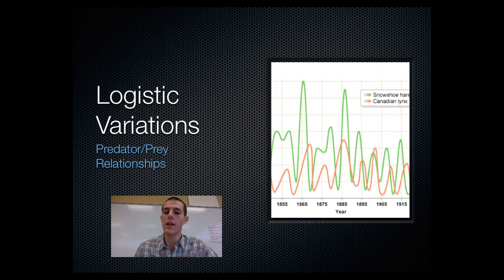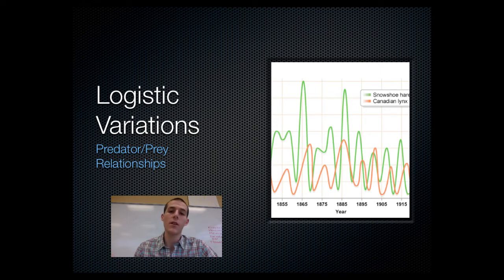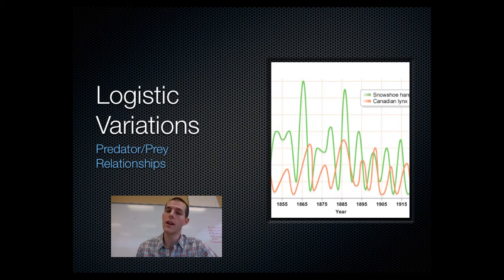The Canadian lynx preys on the hare. When there's a whole bunch of hare available, the lynx can have a lot of kids because it has an ample food supply. But once there become too many lynx, they kill off all the snowshoe hares. And once all the snowshoe hares are gone, there's not enough food for the lynx, so both populations decline together.